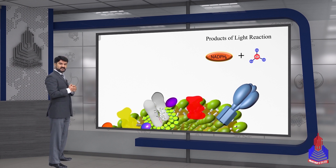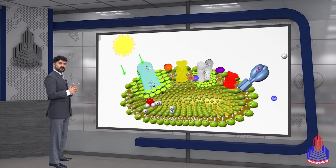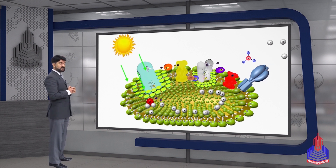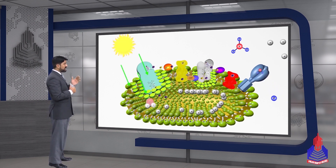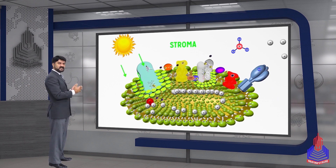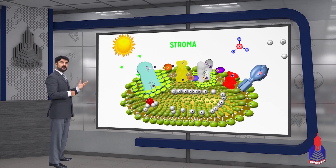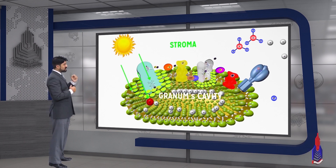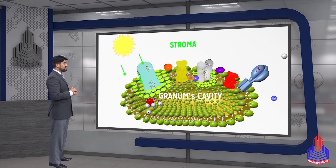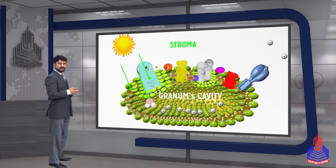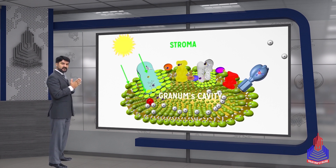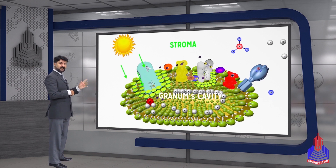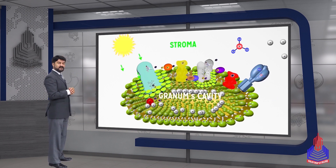Now we move to the next very important concept which is also in the book. Let's focus again on the thylakoid membrane. There is an outer space and an inner space. The outer space of the thylakoid membrane is the stroma, and the inner space is the lumen located inside the granum.